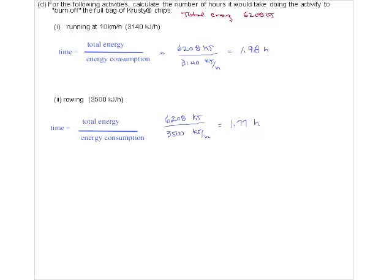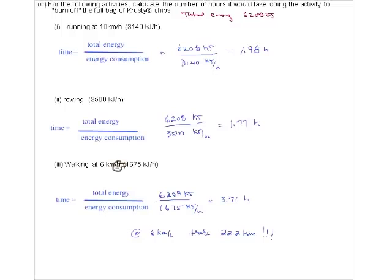Finally, if you go out for a brisk walk at 6 km/h - you'd have trouble talking to the person next to you at that pace - that only consumes about 1,600 kilojoules per hour, so you'd have to walk for 3.71 hours and cover 22 kilometers. That's a lot of walking. So I guess the moral of the story is: don't eat the whole bag of chips.